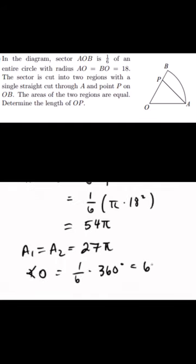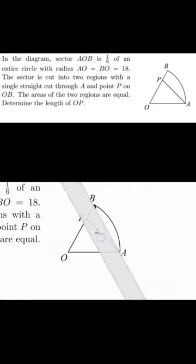The angle at point O must be 60 degrees. Next, connect points A and B. OB and OA are both 18, so the triangle is isosceles.